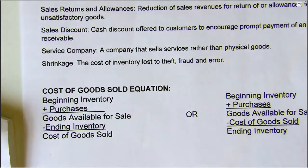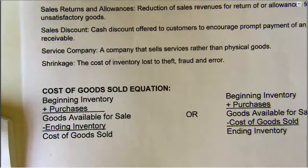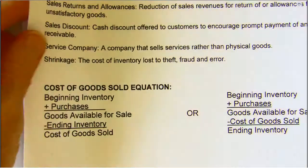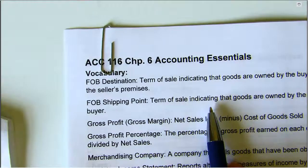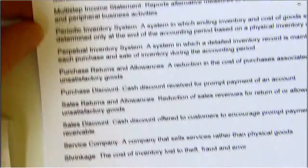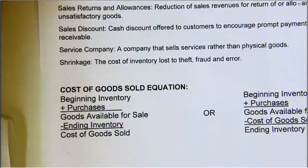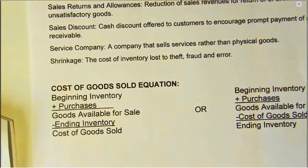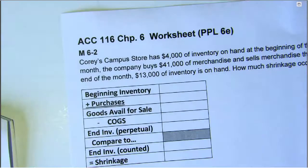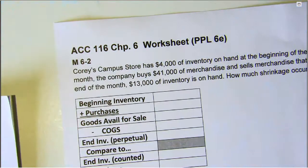In this lecture we're going to be using the cost of goods sold equation to determine inventory shrinkage. We'll be doing a few problems. You can use the accounting essentials document to see what the cost of goods sold equation is, but if you want to just print out the worksheet for chapter 6, I've got all of that information already pre-printed on there.